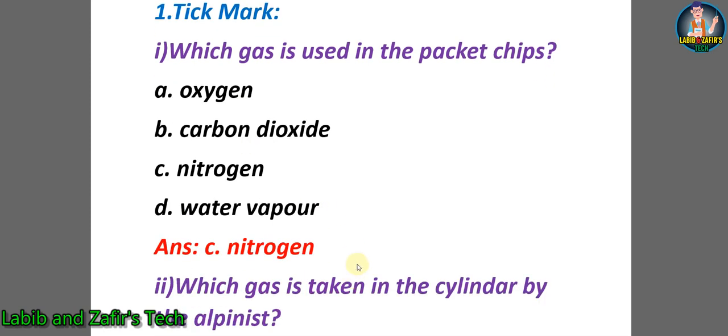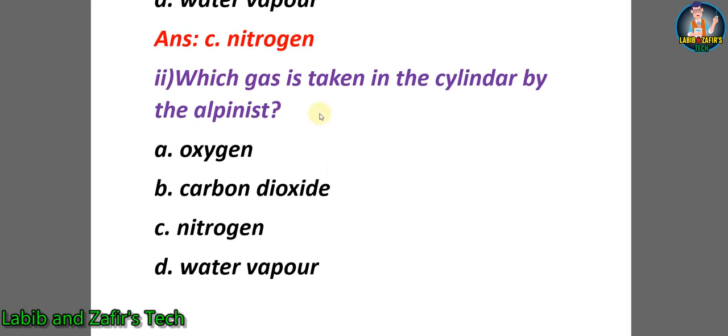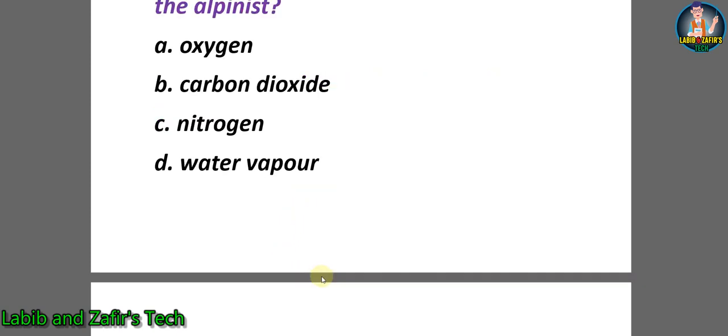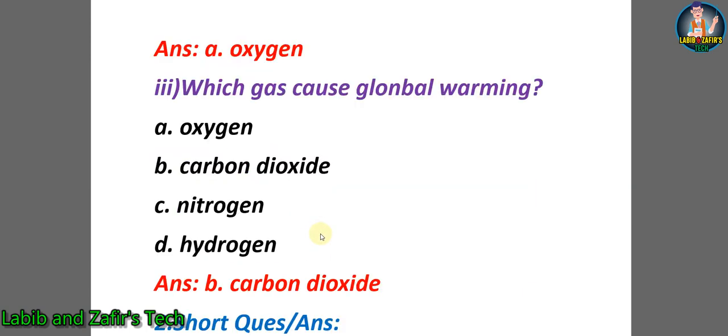So the answer is C) Nitrogen. Second question: Which gas is taken in cylinders? A) Oxygen, B) Carbon dioxide, C) Nitrogen, D) Water vapor. The answer is A) Oxygen. Third question: Which gas causes global warming? A) Oxygen, B) Carbon dioxide, C) Nitrogen, D) Hydrogen. Global warming is mainly caused by carbon dioxide, so the answer is B) Carbon dioxide.